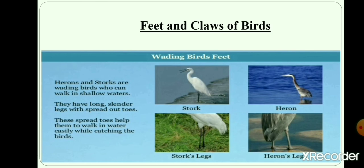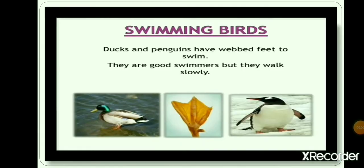Wading birds. Cranes, herons and storks have long legs with spread out toes that help them to walk in muddy and shallow water without sinking. Birds that swim have three toes in front and one small toe at the back. The toes are joined by flaps called webs. The webbed feet act like oars and help the birds to paddle through water. Ducks and swans have webbed feet.